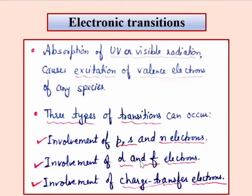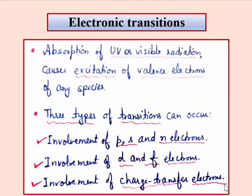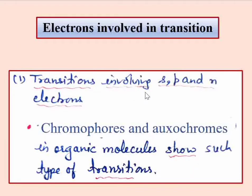There are three categories of electronic transitions. The first category involves S, P, and N electrons. The second category involves D-electrons or F-electrons. The third category is charge transfer of electrons — electron transfer from metal to ligand, ligand to metal, or metal to metal.